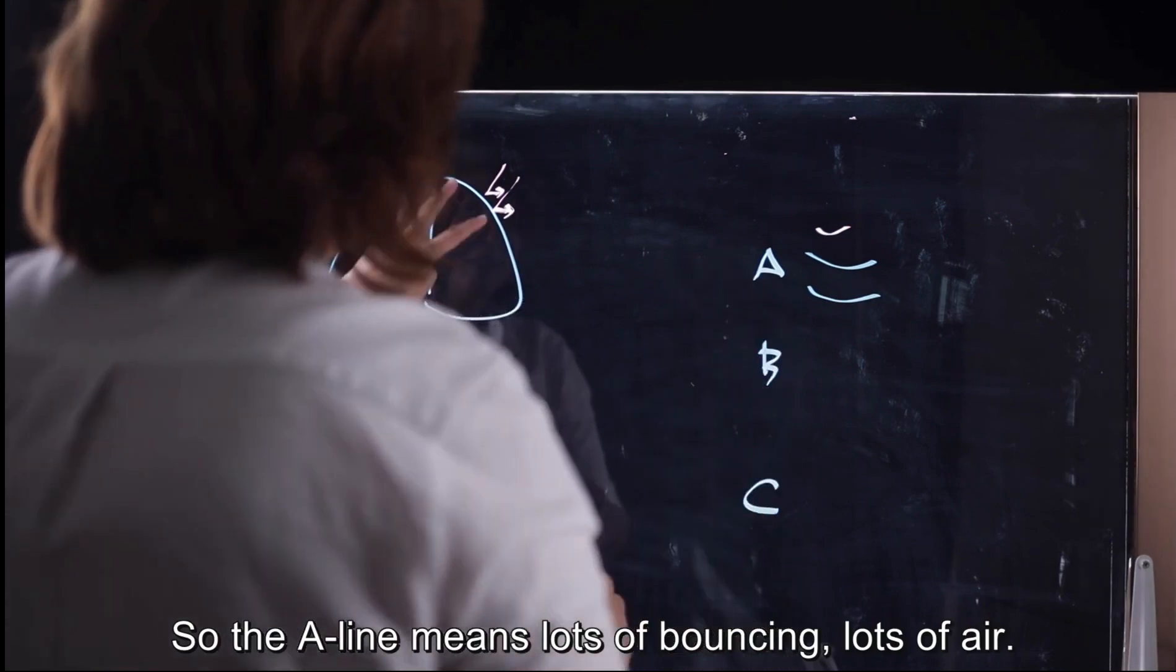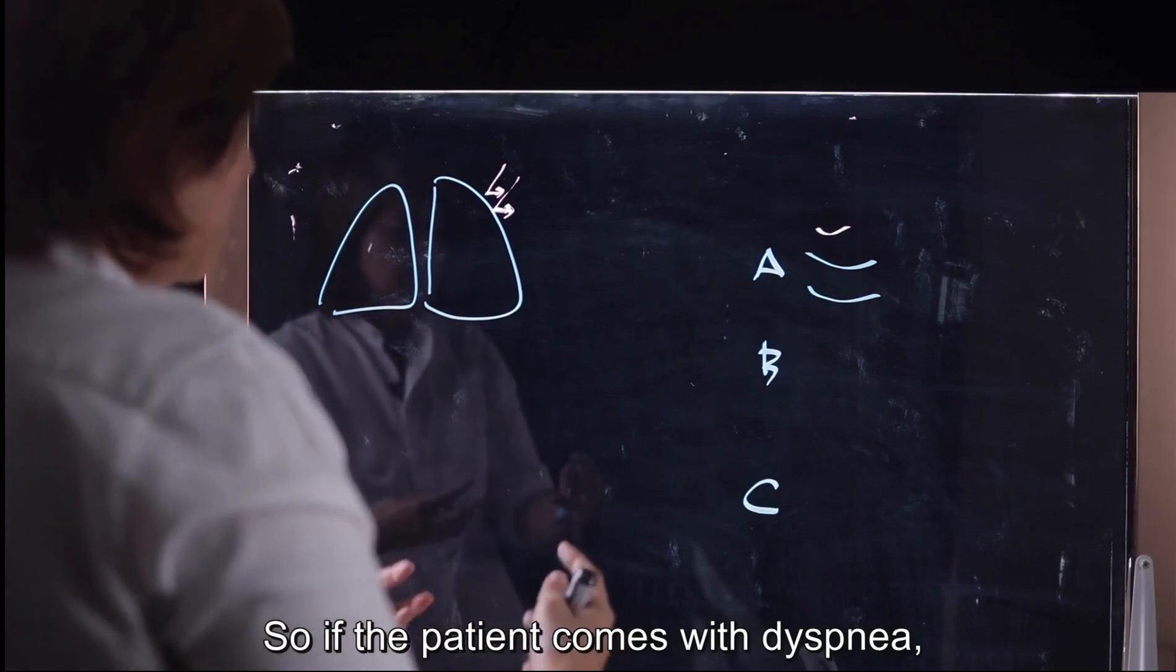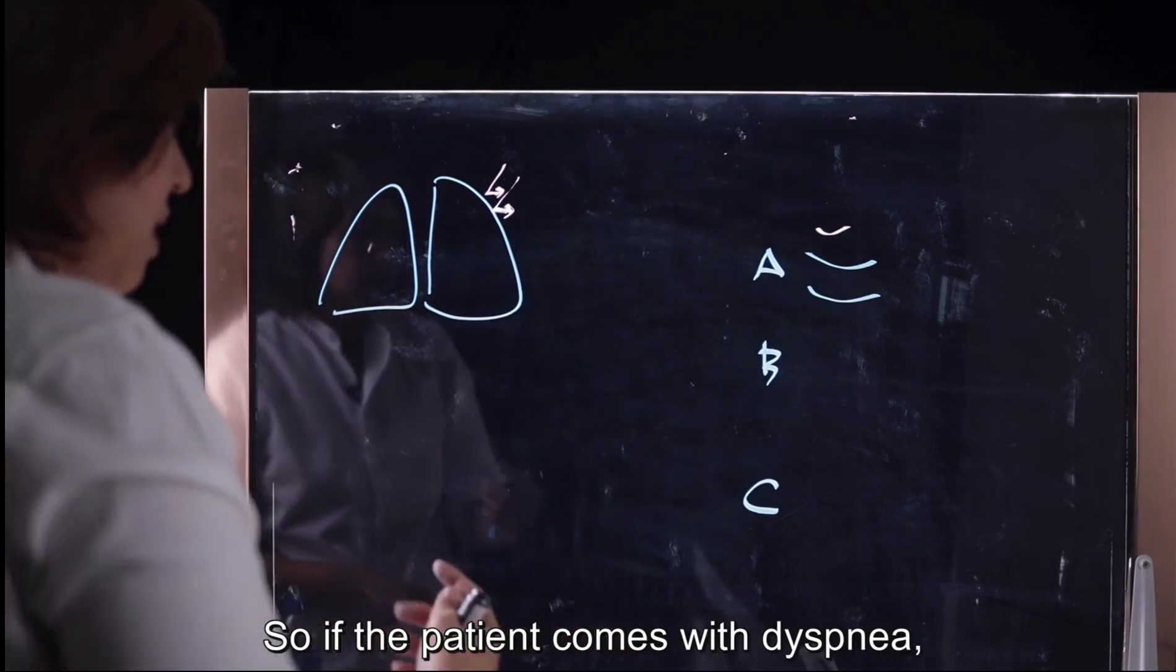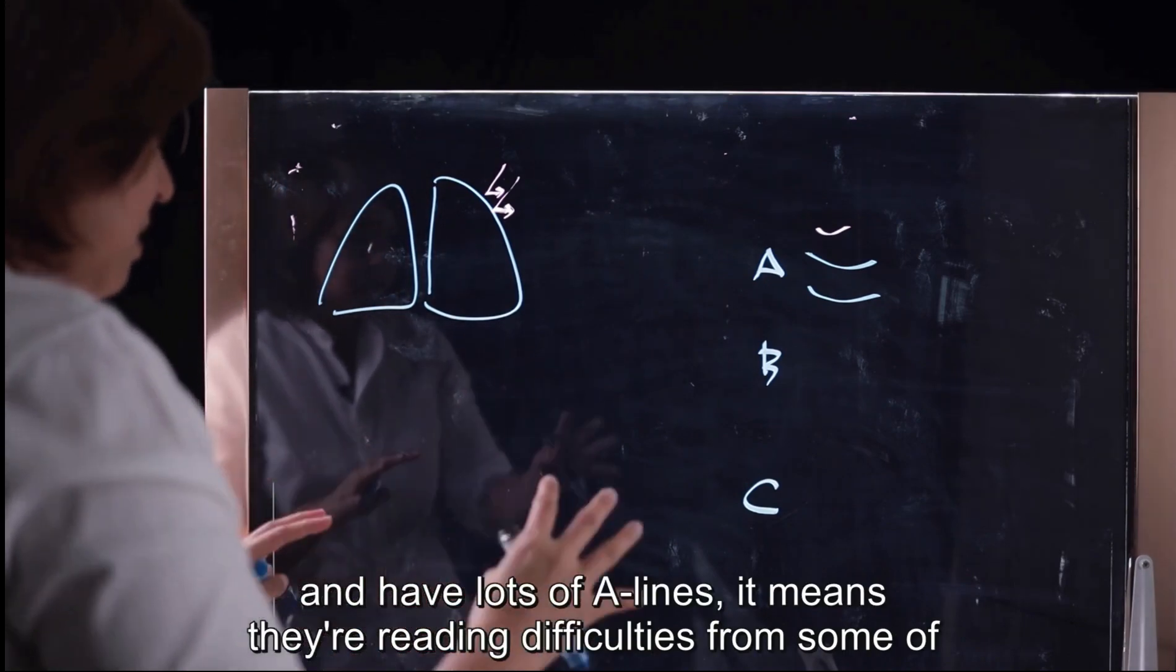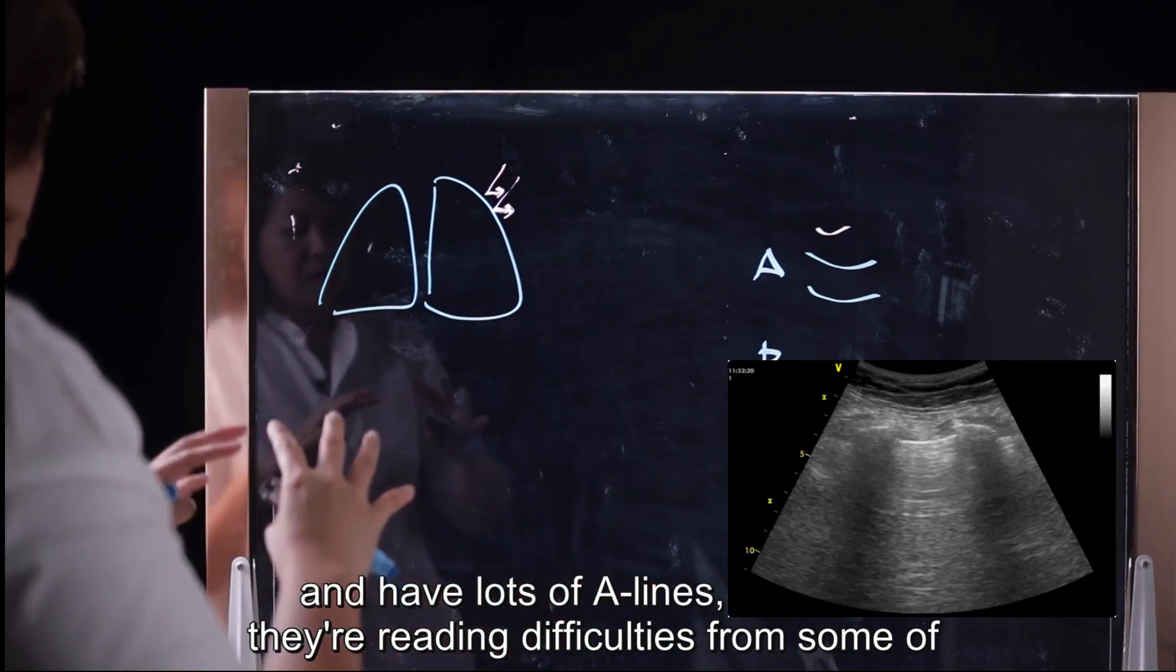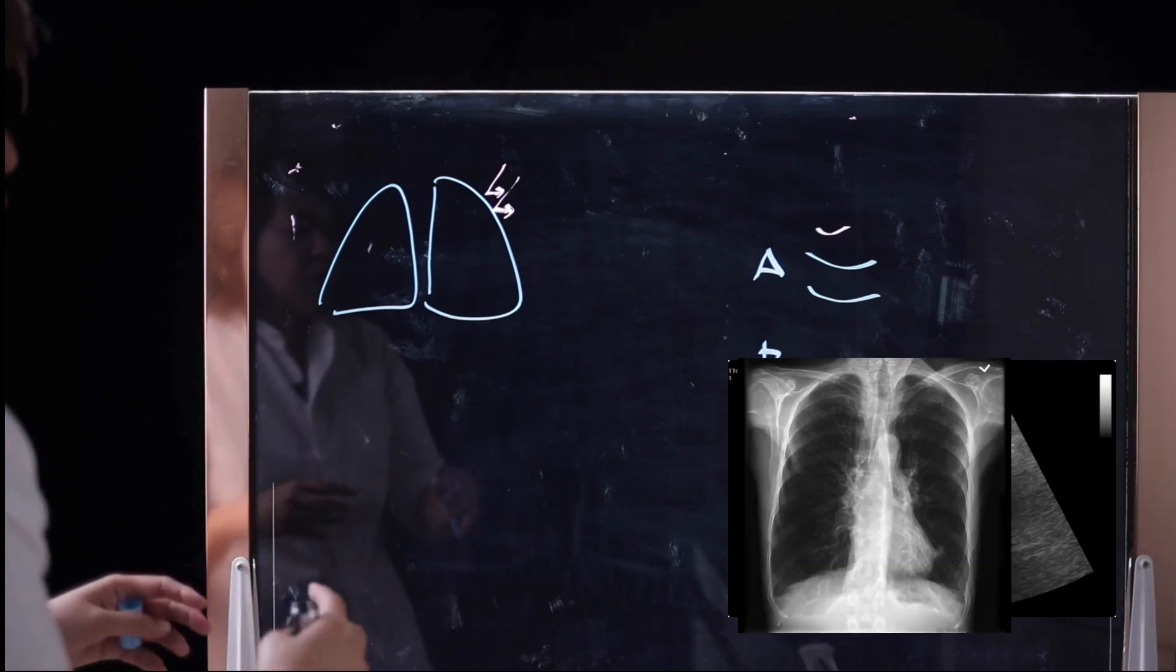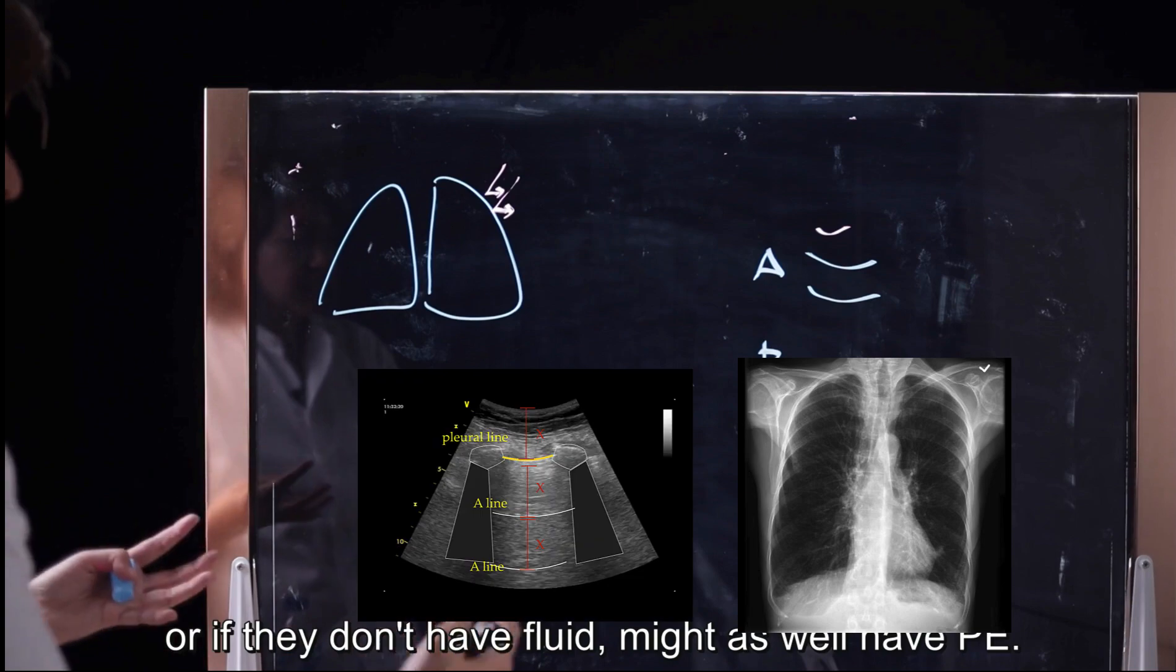So A-line means there's a lot of bouncing, there's a lot of air in patients. So when the patients come in with dyspnea and have A-lines a lot, it means they are breathing difficultly from some bronchial disease, let's say COPD, asthma.